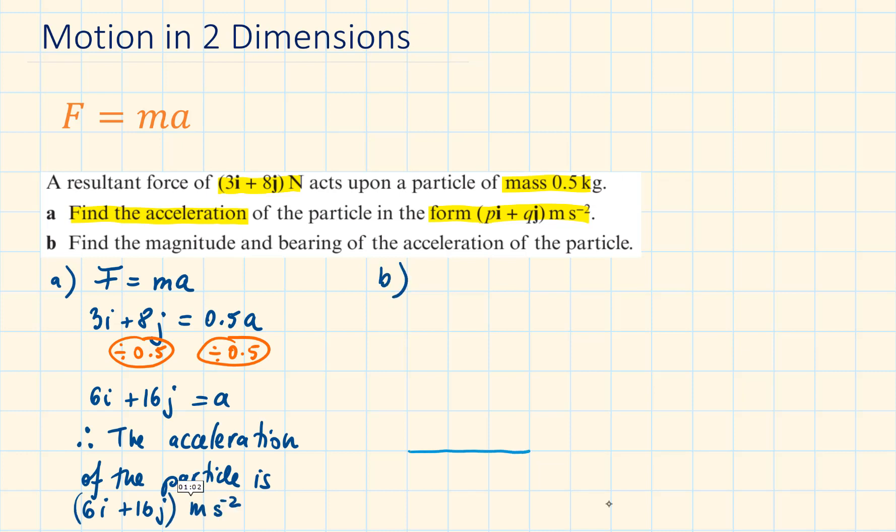To solve part B, we can start by drawing out a right-angled triangle. The resultant force is the hypotenuse of the triangle, which is given by the 6i plus 16j. 6i represents the x-direction and 16j represents the y-direction. The magnitude is given by the length of the hypotenuse.